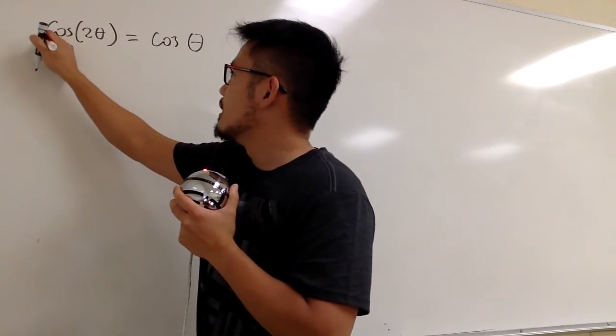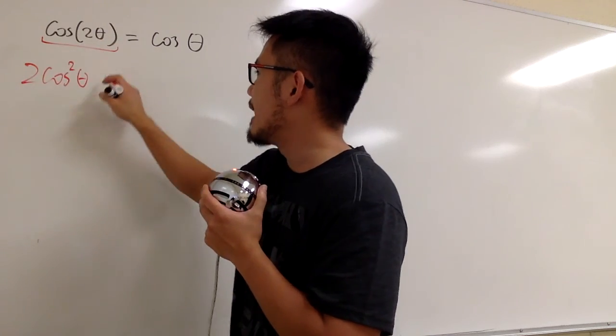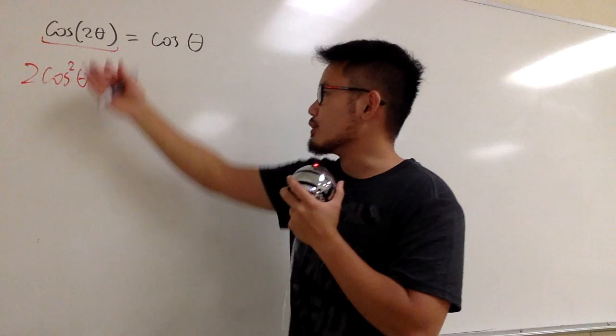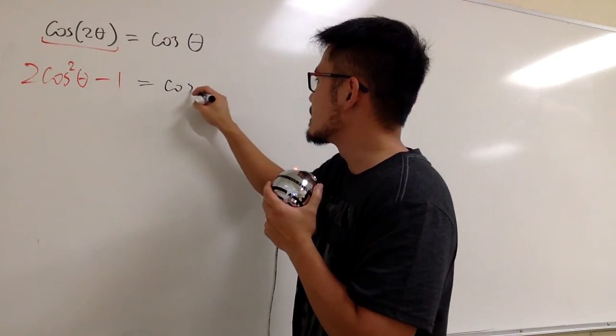This right here, it's the same as what? 2 cosine squared θ minus 1. Okay, the double angle formula for the cosine, this version. And then this is equal to cosine θ.